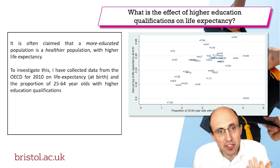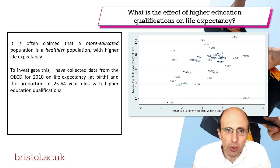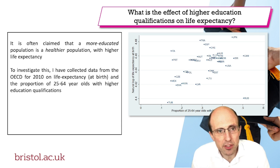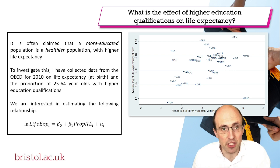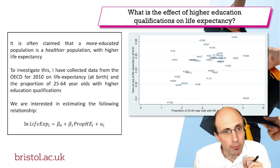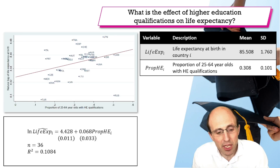We're interested in estimating the relationship between life expectancy as our dependent variable and the proportion with higher education as our explanatory variable. We think there might be a non-linear relationship, so we've decided to estimate the relationship with the natural log of life expectancy as our dependent variable. We've used ordinary least squares to estimate this relationship and we get the following results.